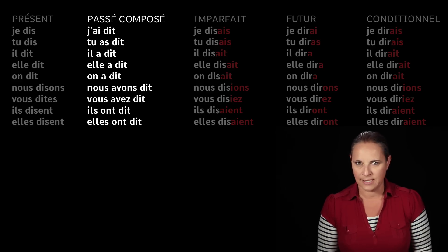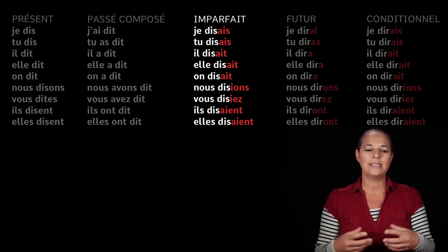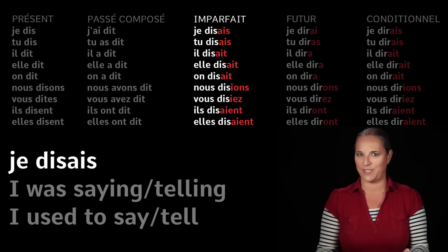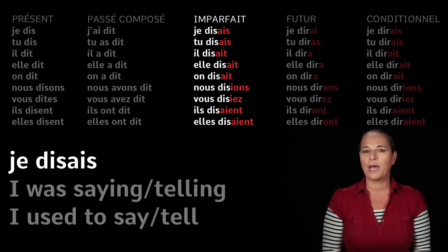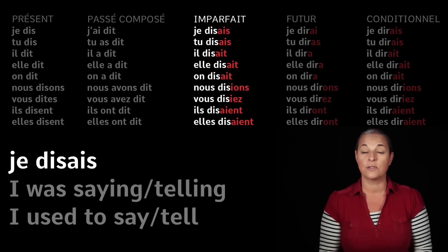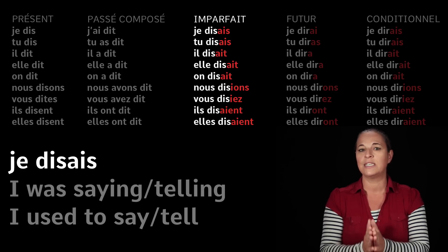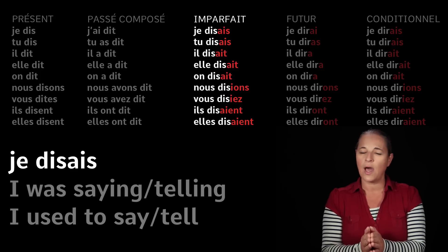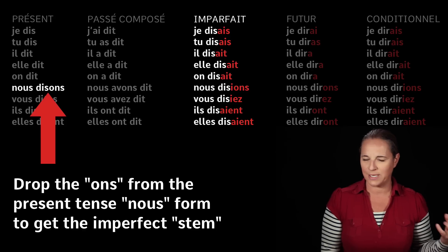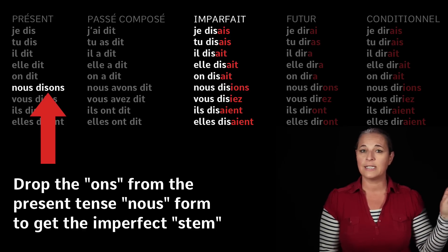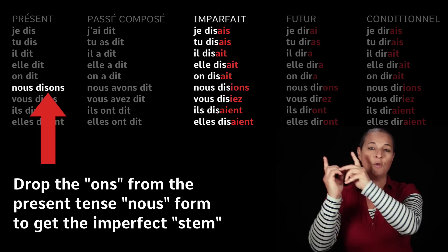Let's have a look at the third tense — the imparfait. The imparfait is a funny one; it's as if I'm saying 'I was saying' or 'I used to say'. You have only one way of saying this in French, by adding special endings. For the imperfect, you need the 'nous' form of the present tense. For dire, it is 'nous disons', so the stem 'dis-' is what we use for the imperfect.